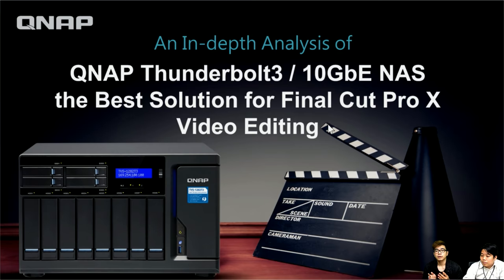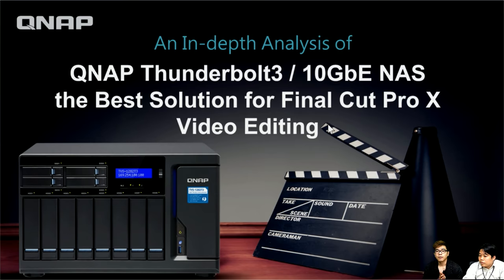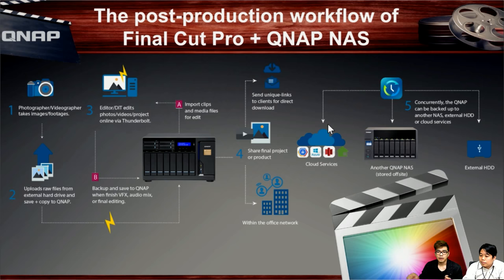Thunderbolt 3 has a higher speed of around 40 gigabits per second, though in practice it simulates around 20 gigabits. With all the information and reasons mentioned, that is why we will show you everything today, starting with the workflow in a media studio or post-production environment.